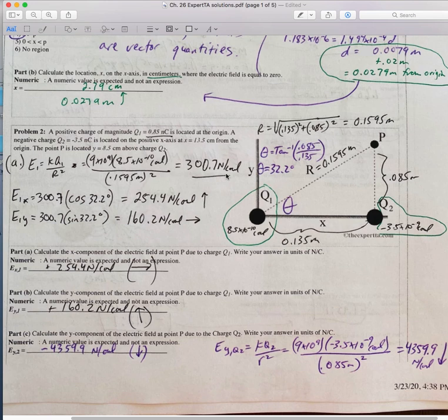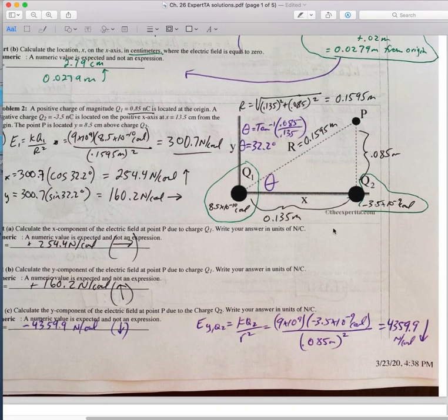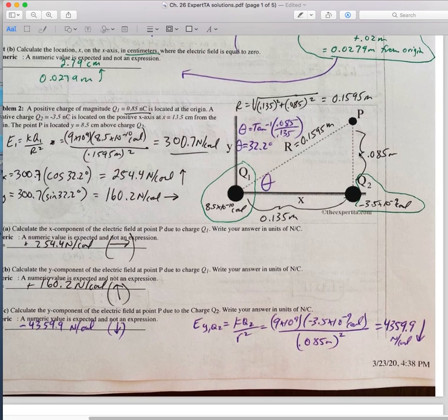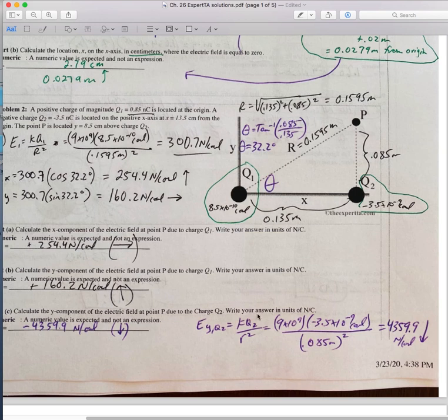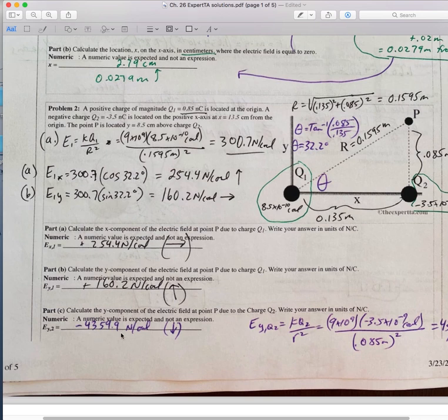So once I get the total electric field strength at point P caused by Q1, to get the horizontal part I take this, multiply it by the cosine of the angle. To get the vertical part, multiply it by the sine of the angle. So by convention, up and right is positive, so these are both positive field strengths. For this one, the electric field at this point caused by this negative charge is going to be pointing downward, so that's going to be a negative value. So once again, I use the general formula for electric field from a point source, put a negative in there, and I get this pointing down with around 3560 newtons per coulomb.